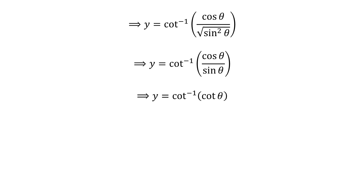As cosine of theta upon sine of theta is equal to cotangent of theta, y is equal to the inverse cotangent of cotangent of theta. Applying inverse function properties gives us y is equal to theta.